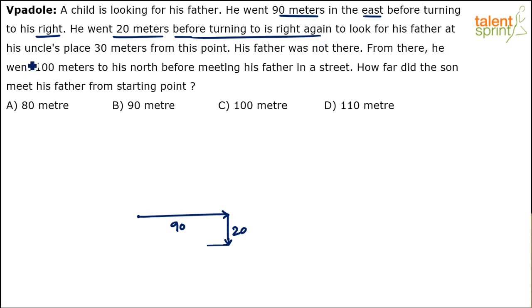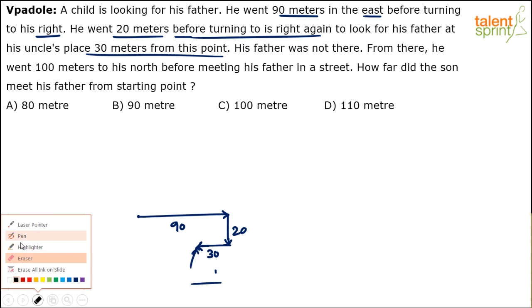To look for his father at his uncle's place, 30 meters from this point. So he's looking for his father at his uncle's place 30 meters from this point. From this point he covers 30 meters. He turned right, covered 30 meters. So this is his uncle's place.